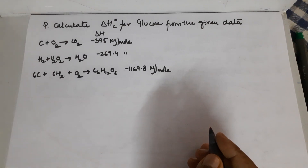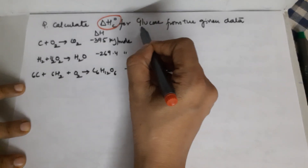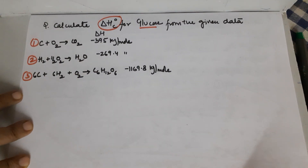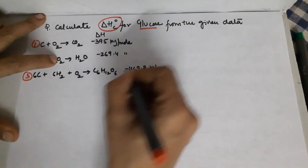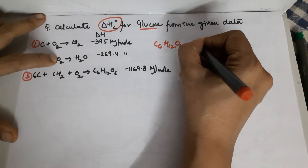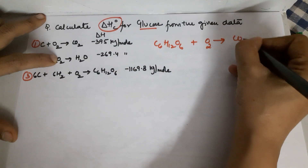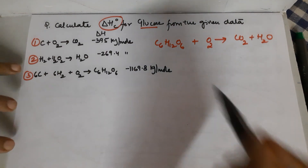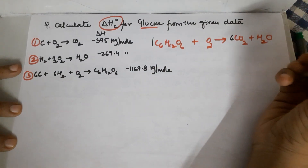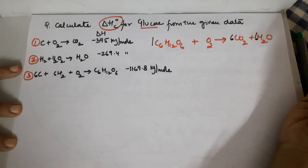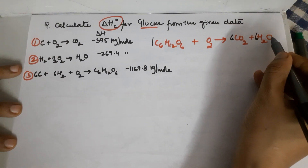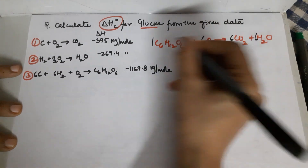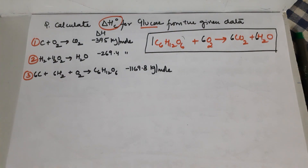The next question asks to calculate the enthalpy of combustion for glucose from three given equations. First you need the target equation: C6H12O6 plus oxygen gives CO2 plus H2O. Since it is enthalpy of combustion, glucose remains one mole. You have six carbons so make it 6CO2; 12 hydrogens so make it 6H2O. Balancing oxygens: 12 plus 6 equals 18 oxygens on the right, but 6 are already in glucose, so 12 O2 are needed — this becomes the target equation.